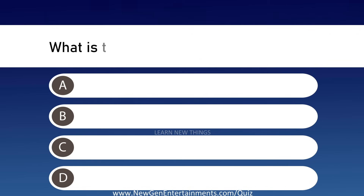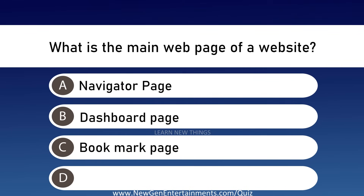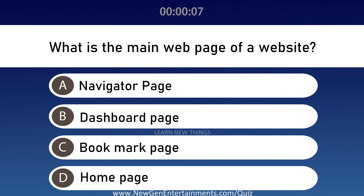What is the main web page of a website? Options are A: Navigator Page, B: Dashboard Page, C: Bookmark Page, and D: Home Page. Answer is Option D, Home Page.